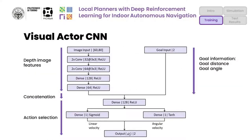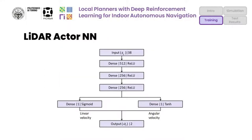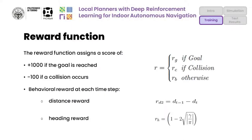The actor convolutional neural network presents two separate inputs: one for the goal information — distance and angle — and one for the depth image. The LiDAR actor network is simply composed of three fully-connected layers. The reward function uses a simple shape: a positive score if the goal is reached, a penalty for collisions, and a behavioral reward assigned at each time step in order to let the agent get close to the goal while keeping a satisfying orientation.